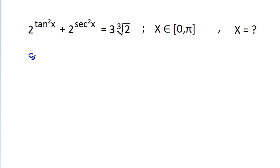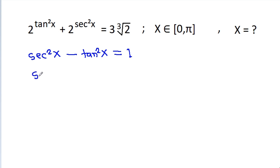So, we use the identity: sec squared x minus tan squared x is equal to 1, so sec squared x is equal to 1 plus tan squared x.